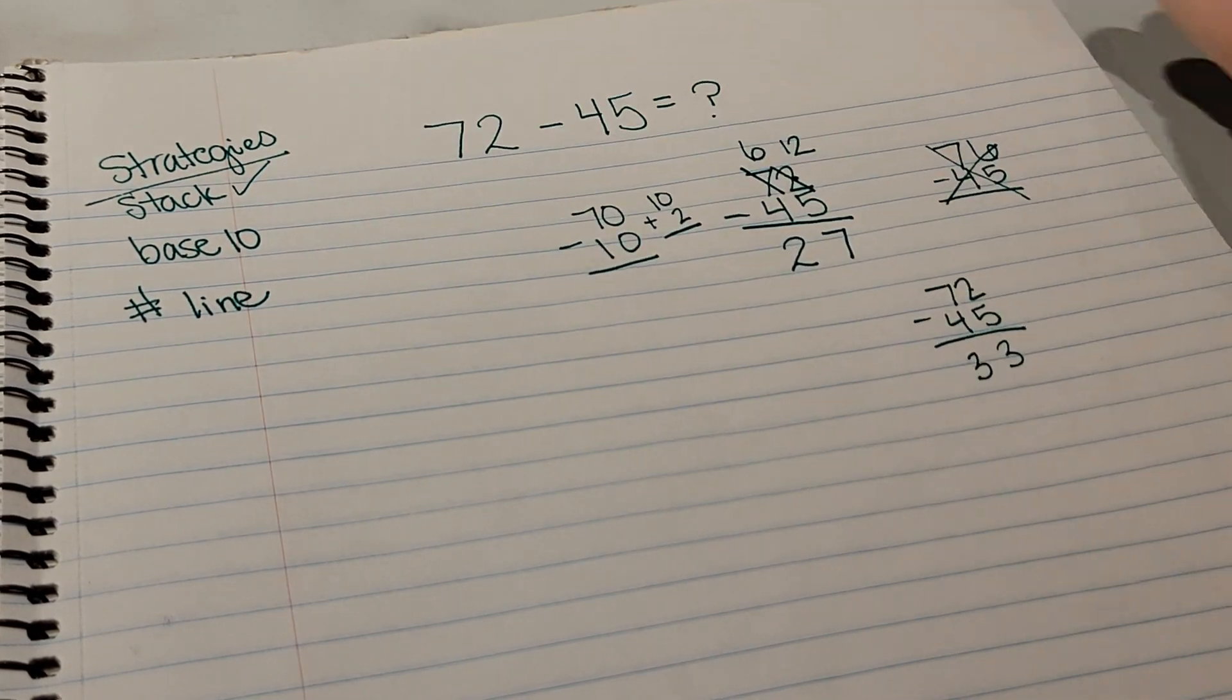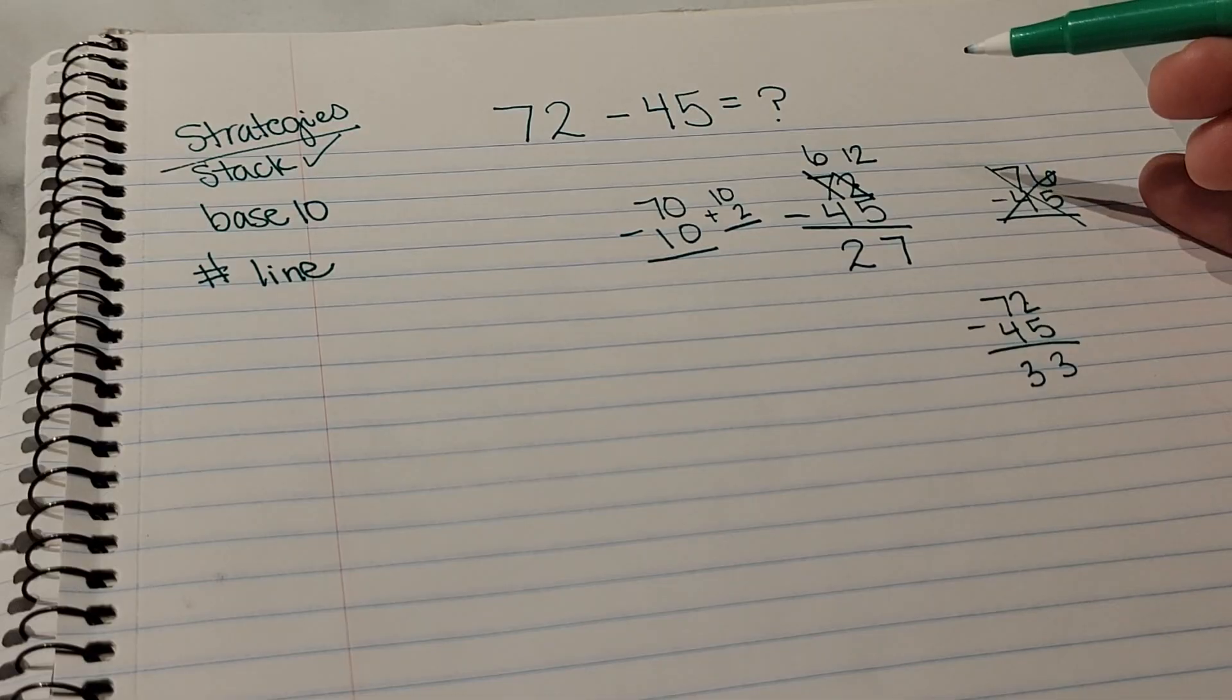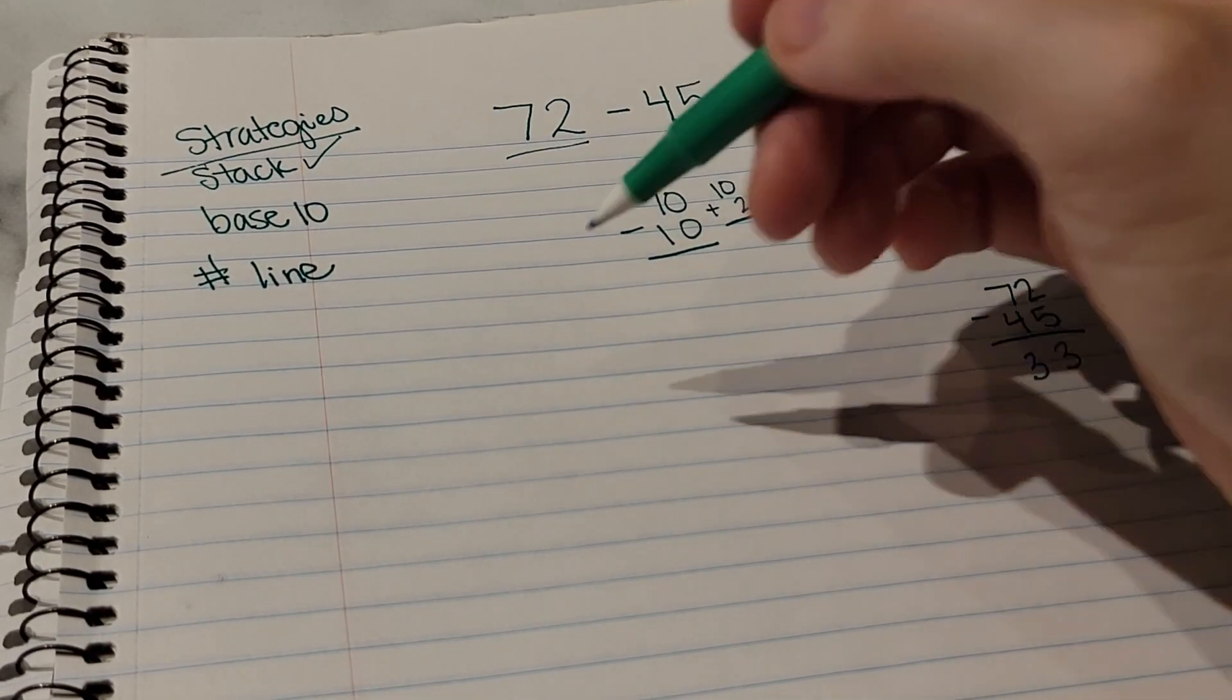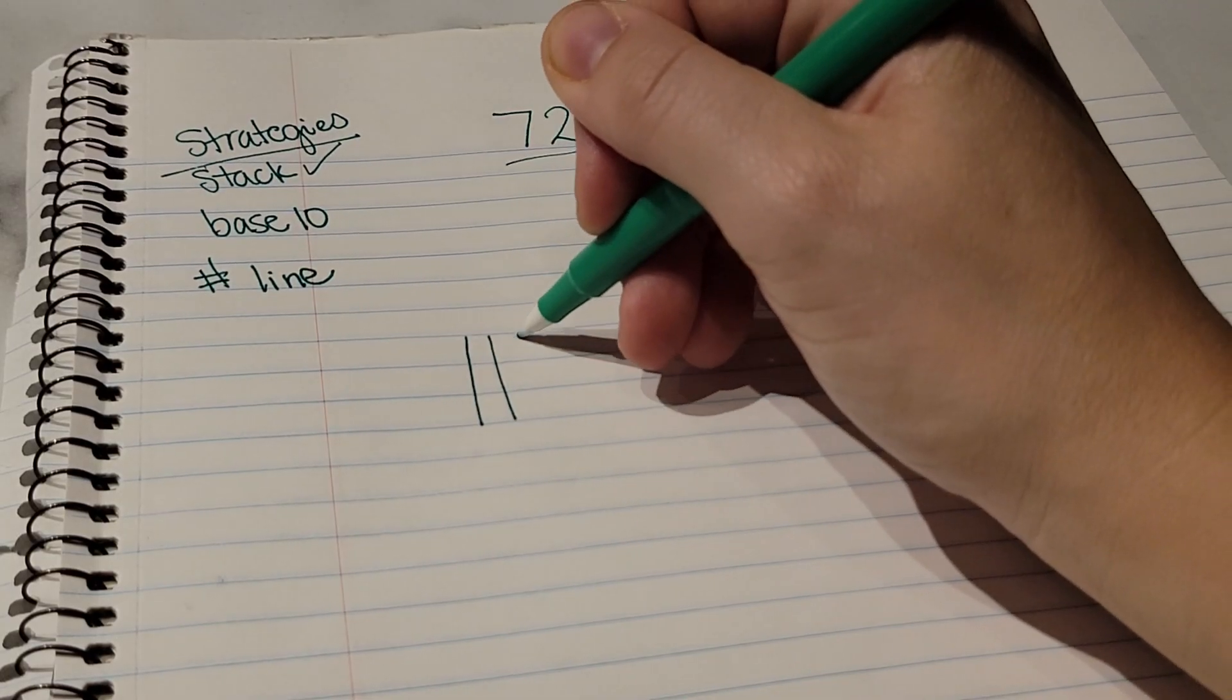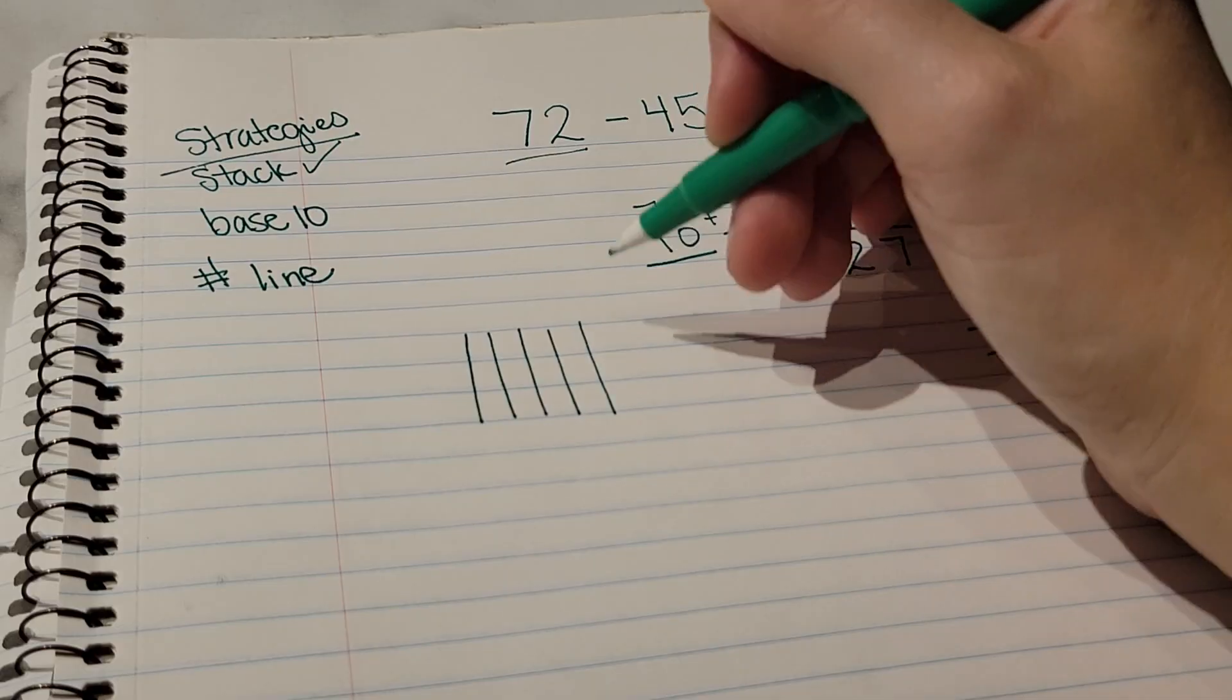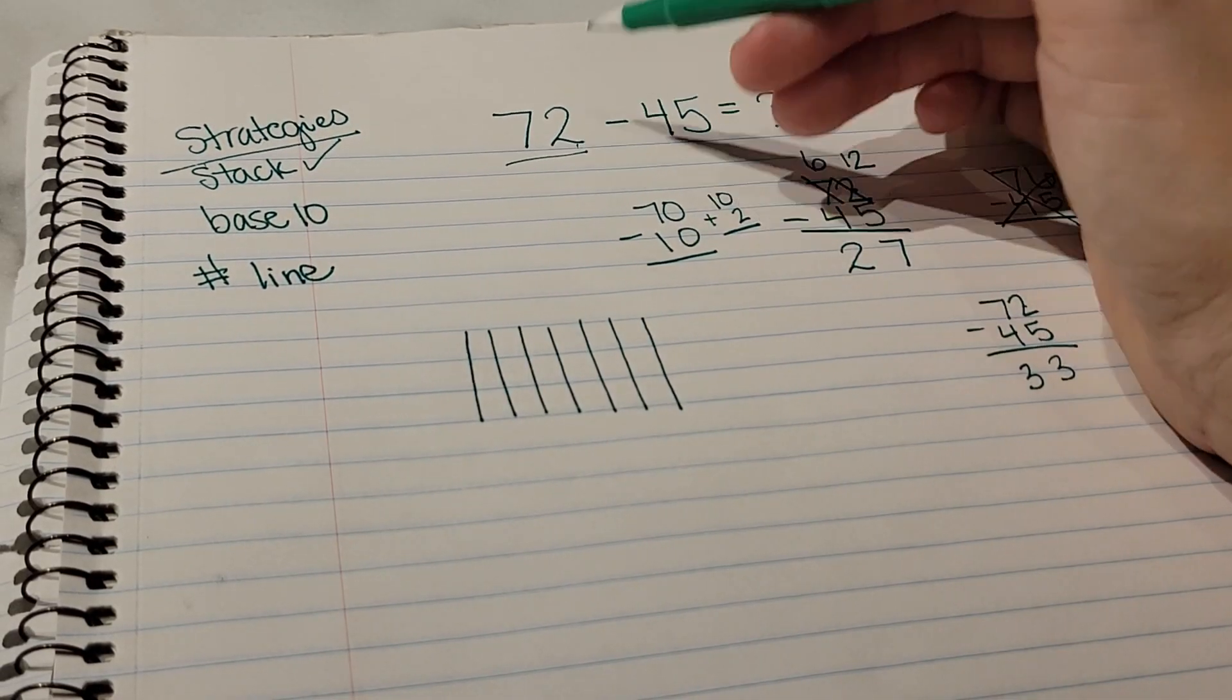Okay, so that's stacking strategy. The base 10 strategy we learned today. Base 10 is drawing a picture starting with your largest number, so 72. So we would draw our picture with base 10 blocks - your long tens rods is just a big line. We're going to draw 7, representing 70.